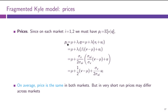We can start by looking at market prices that result in these fragmented markets. The price P_I that results in market I is given by the same expression as in the consolidated market, except for a noise term. If we take the expected value of this price, the last term goes away because the expectation of U_I is zero. So P_I on average equals the same as in the consolidated market, meaning prices are the same on average in both fragmented markets and in the consolidated market.